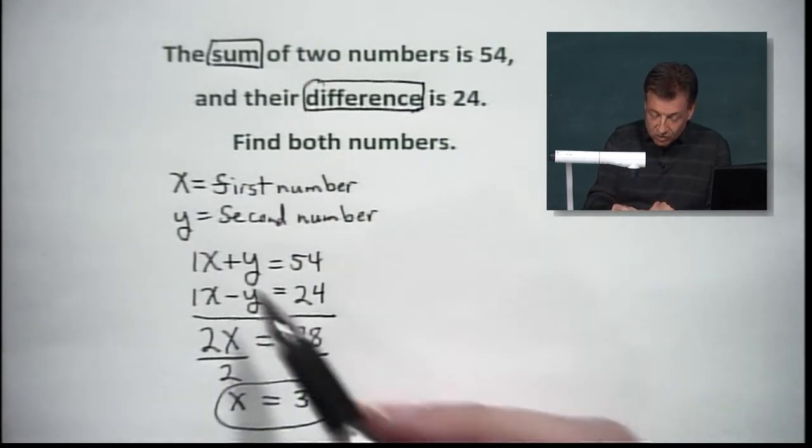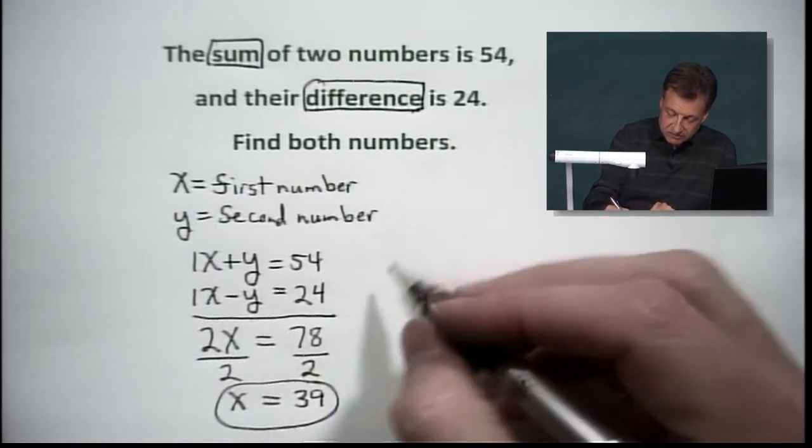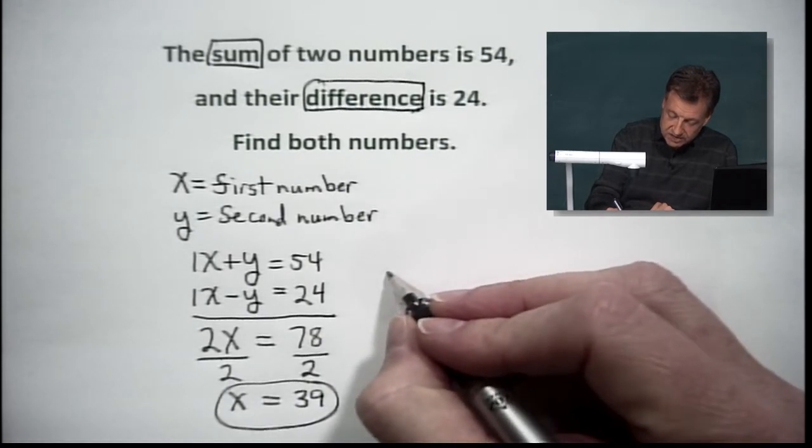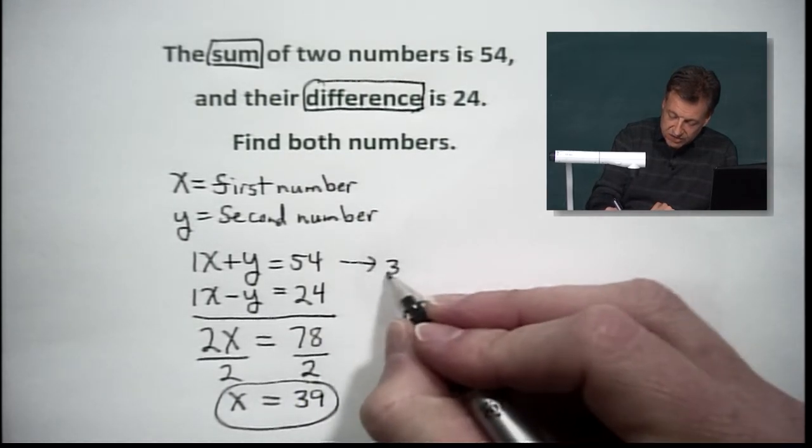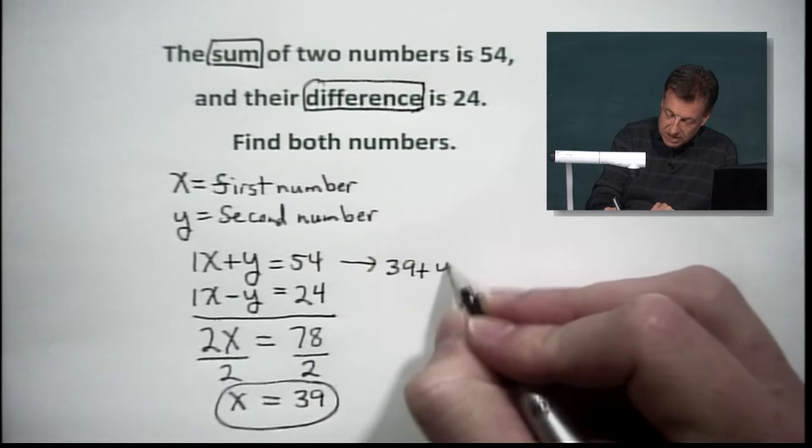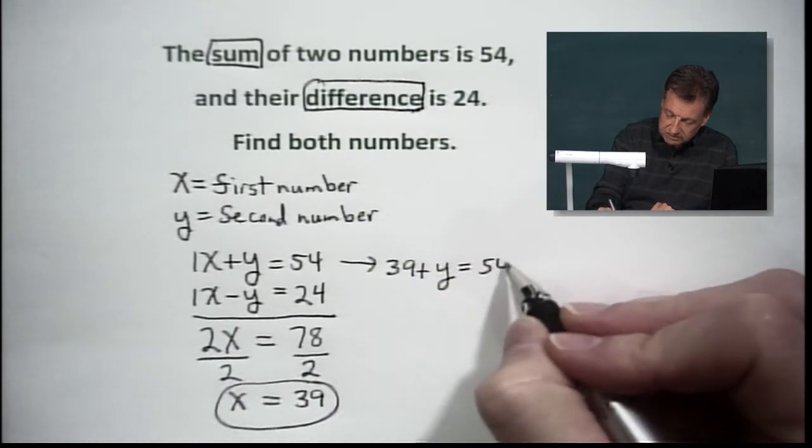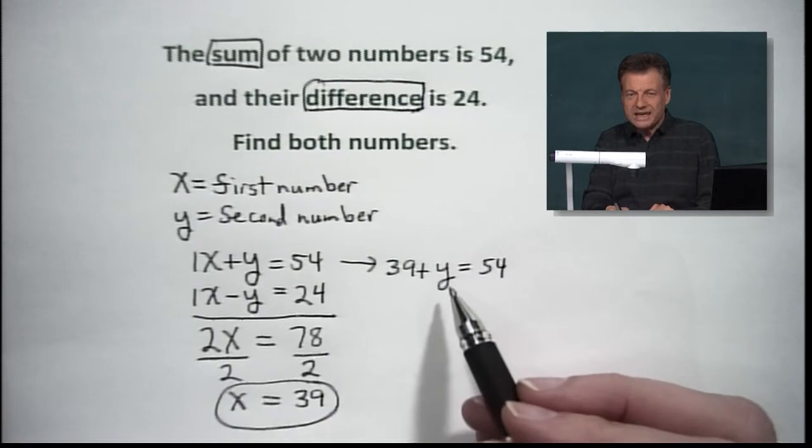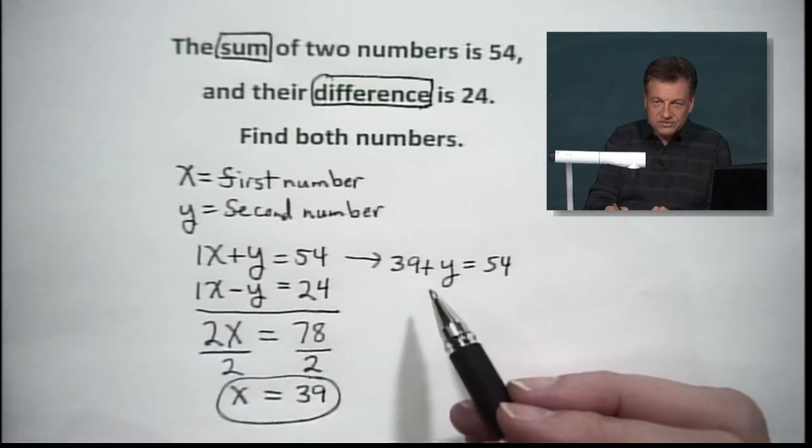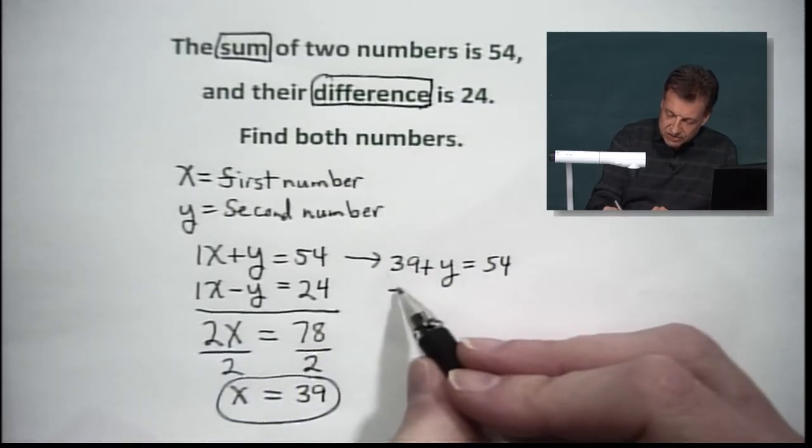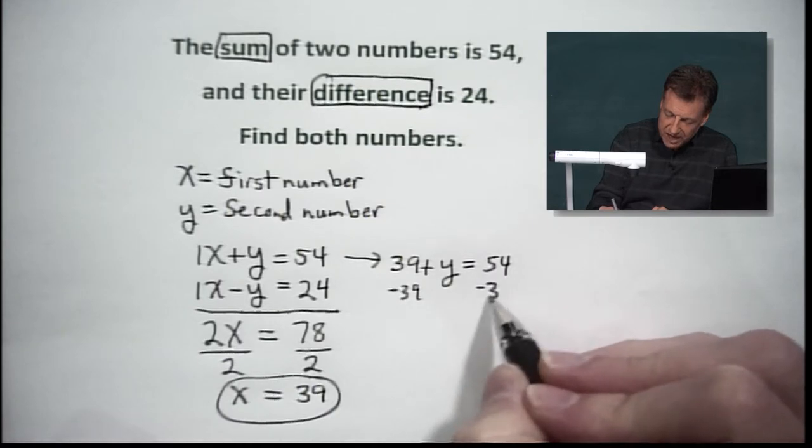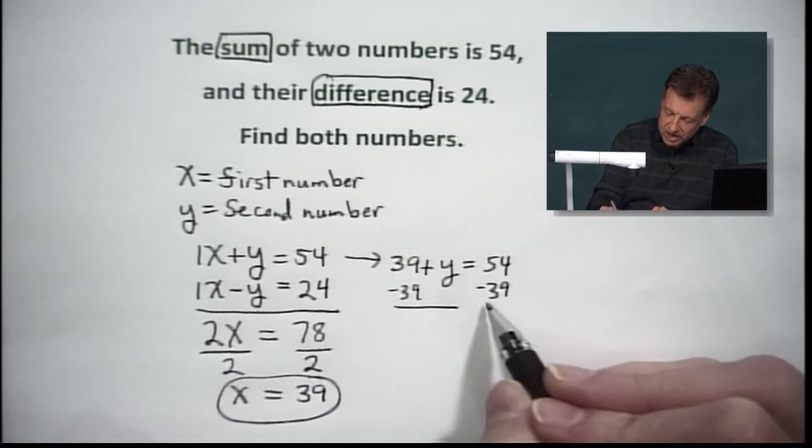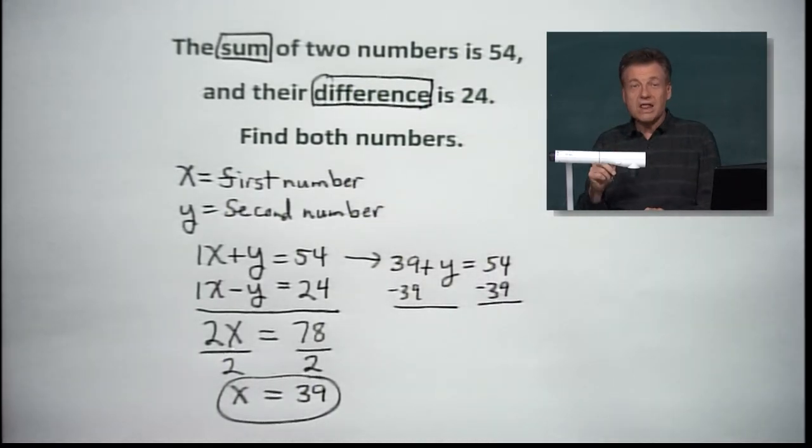We need to know what plus Y is going to give us 54. Well, we already know, right? We're going to take right across here. We're going to say 39 plus Y equals 54. And we're going to find out what Y equals. Real straightforward, pretty easy stuff here. Let's subtract our 39 from both sides, because that's the way we do it. Subtraction property of equality.